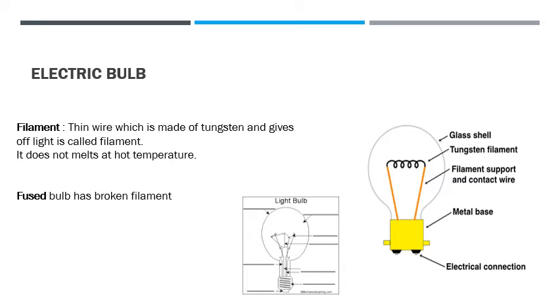Electric bulb. If you observe this electric bulb, then you will find a very thin wire inside this bulb. What is this wire? This wire is called filament.